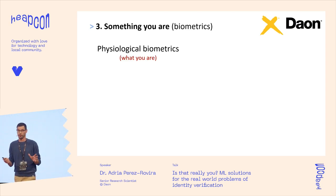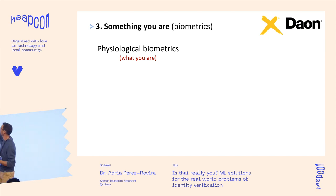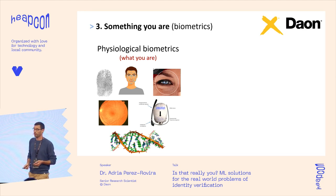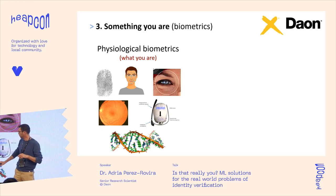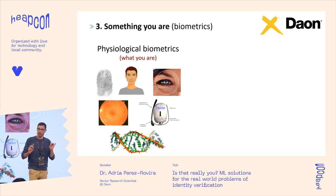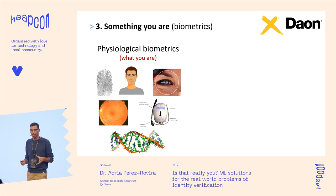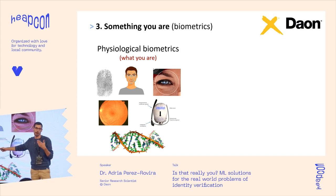Finally, something you are — biometrics. There are two big families. The first is physiological biometrics — probably what you're most familiar with. 'Bio' comes from life and 'metrics' from measurement, so you measure parts of the body. Examples include fingerprints, face recognition, iris recognition, and retina — the back part of the eye with very particular veins. You've seen retina scanners a lot in movies from 10-15 years ago; it's much harder to tamper with than iris.